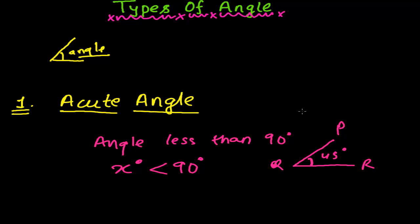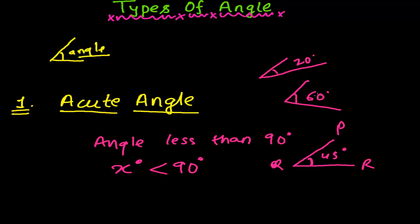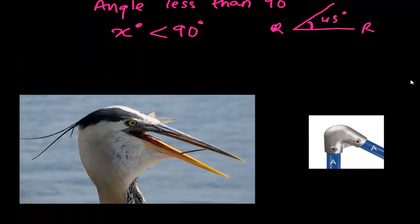Suppose an angle of 30 degrees, or 20 degrees, or 60 degrees, or even up to 89 degrees — all of these are acute angles. Angles less than 90 degrees are called acute angles. Now let me show you some real-life examples of acute angles.